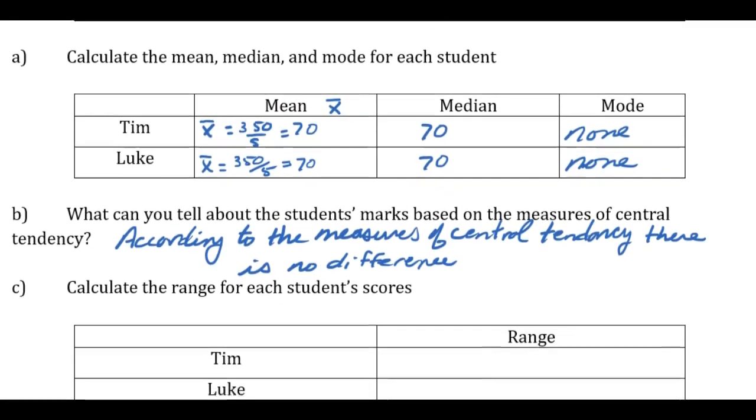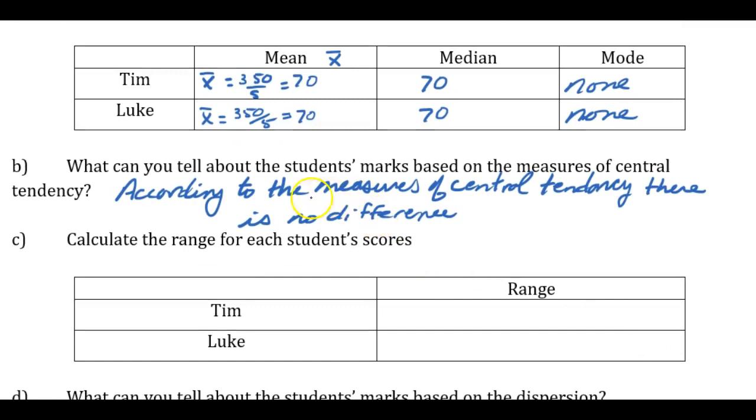If we look down to the next question, calculate the range. And for Tim, remember what we said above, the range is the difference between the person's highest score and their lowest. So Tim has a highest mark of 80. He has a lowest mark of 60. So he has a 20 mark difference from his lowest score to his highest score. For Luke, Luke's highest mark is 72. His lowest mark is 68. And the range is 4.